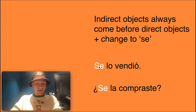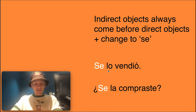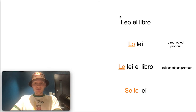More examples: it wouldn't be le lo vendió, it's se lo vendió. And se lo compraste — 'Did you buy it for her?' Now, if you just see se lo vendió on its own, you don't know if it's 'to her' or 'to him.' To clarify, you can add a él or a ella at the end: se lo vendió a ella — 'he or she sold it to her.' Little pro tip!